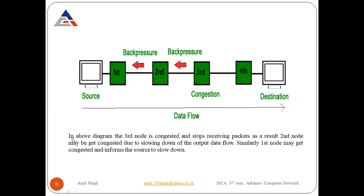In the diagram, the third node is congested and stops receiving packets. As a result, the second node may also become congested due to the slowing of output data flow. Similarly, the first node may get congested and informs the source to slow down. This is the back pressure process — controlling congestion by propagating the signal backward from the congested node to the source.